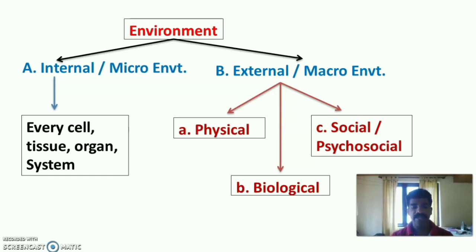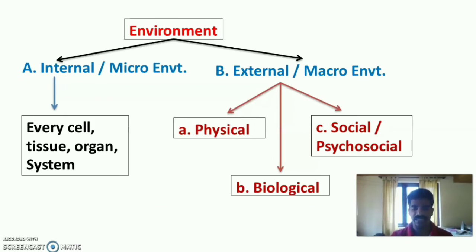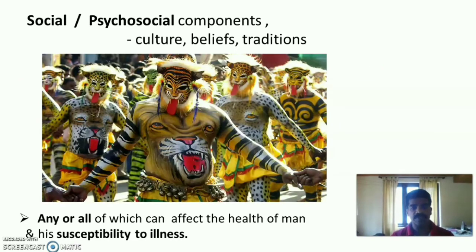Physical environment includes air, water, soil, etc. Biological environment includes plants, animals, microbes, etc. Social or psychosocial environment includes our culture, beliefs, traditions, etc. Any or all of these environments can affect the health of a person and their susceptibility to illness.